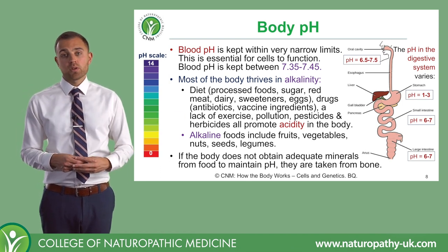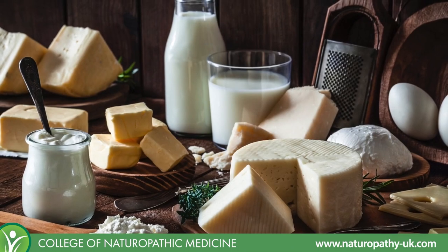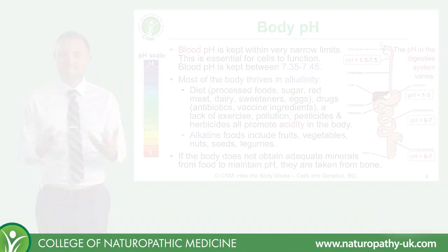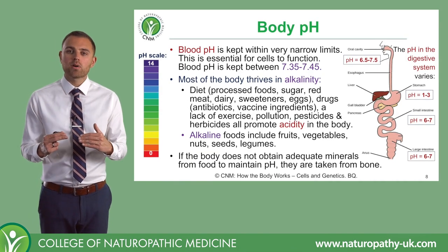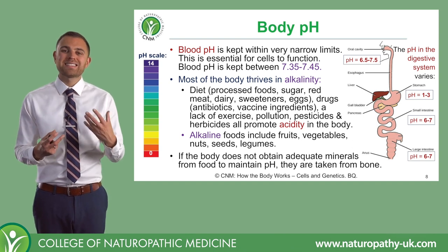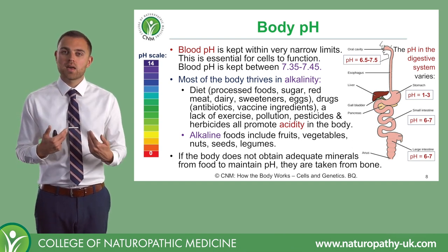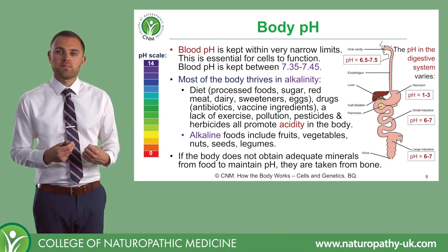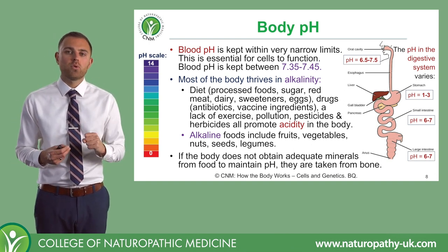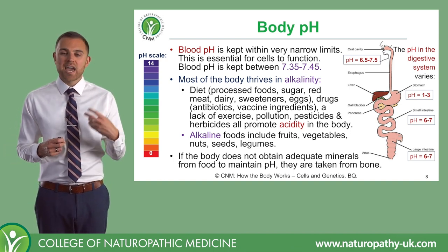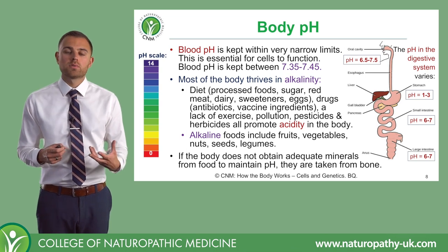Dairy is probably one of the single worst culprits. When dairy enters the body, it becomes acidic. So whilst it might have an alkaline pH externally, it is converted into an acidic compound internally. We'll talk more about this in our skeletal system lecture, but this is a really important point because many people are told to ingest as much dairy as they can to help when people have brittle bones, also known as osteoporosis.